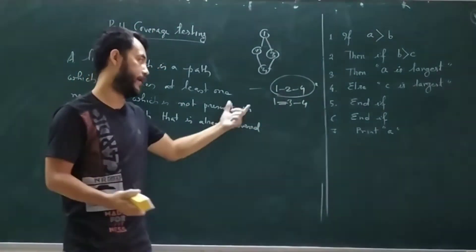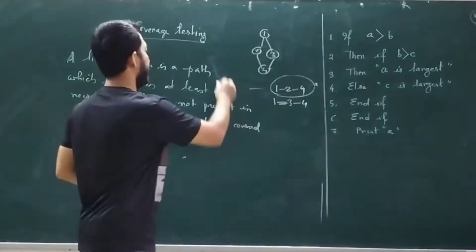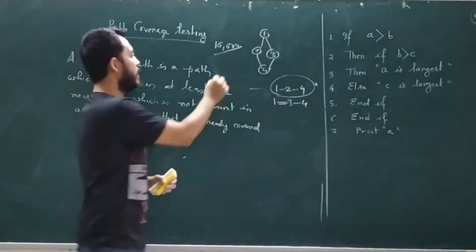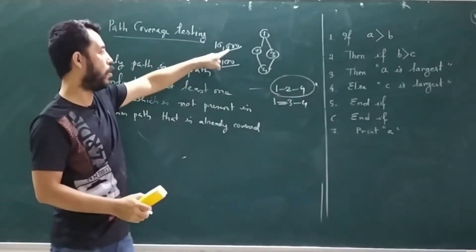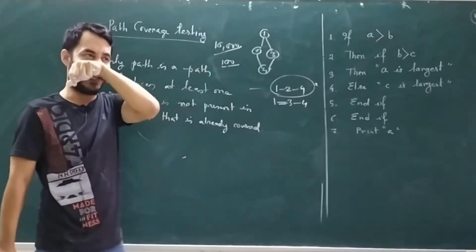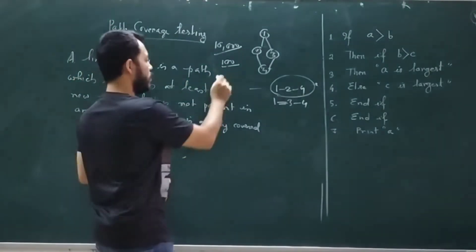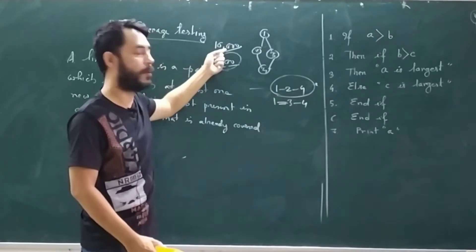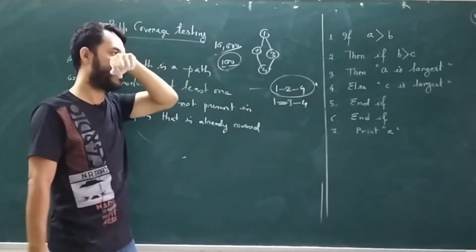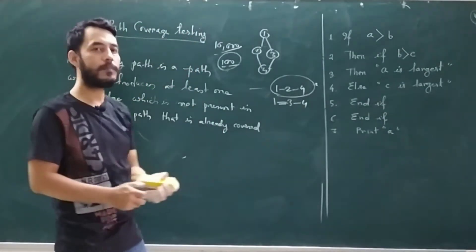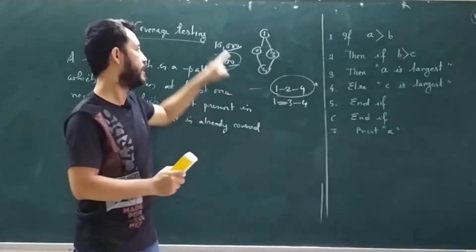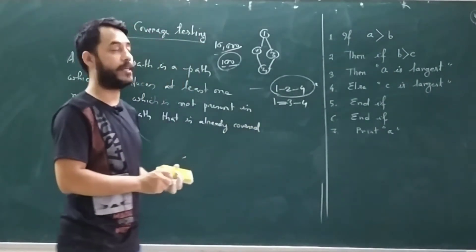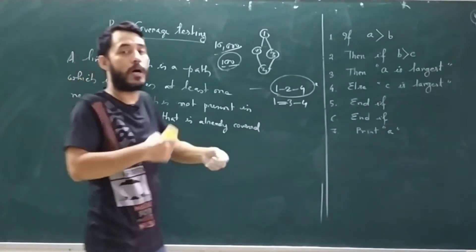The importance of linearly independent paths is this: if your program has 10,000 paths but only 100 are linearly independent, all remaining paths are subsets of those 100. So if you design test cases to cover those 100 linearly independent paths, all 10,000 paths are effectively covered — that is the basic benefit of path coverage testing technique.